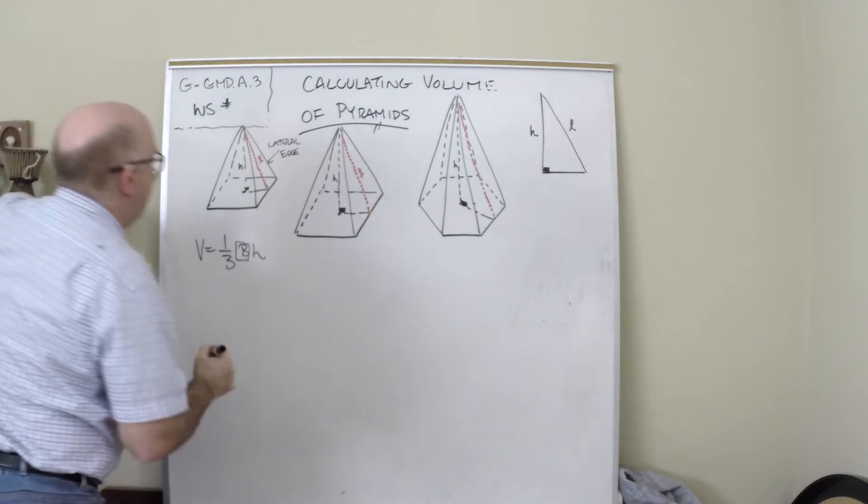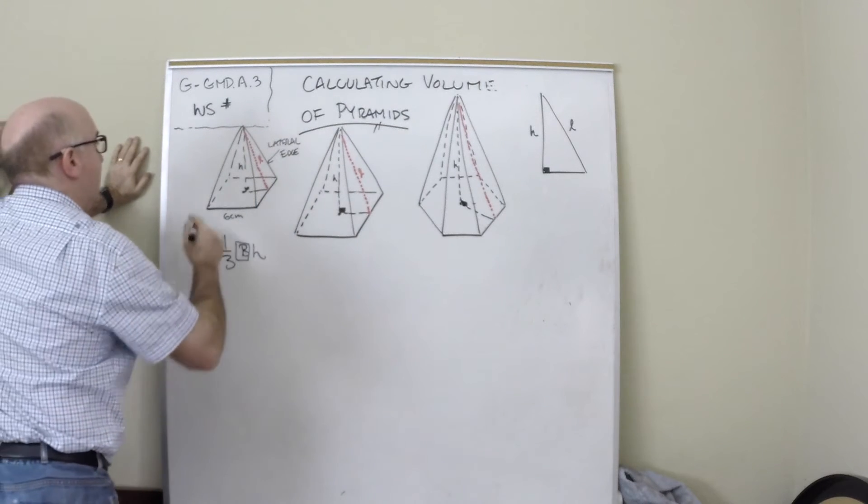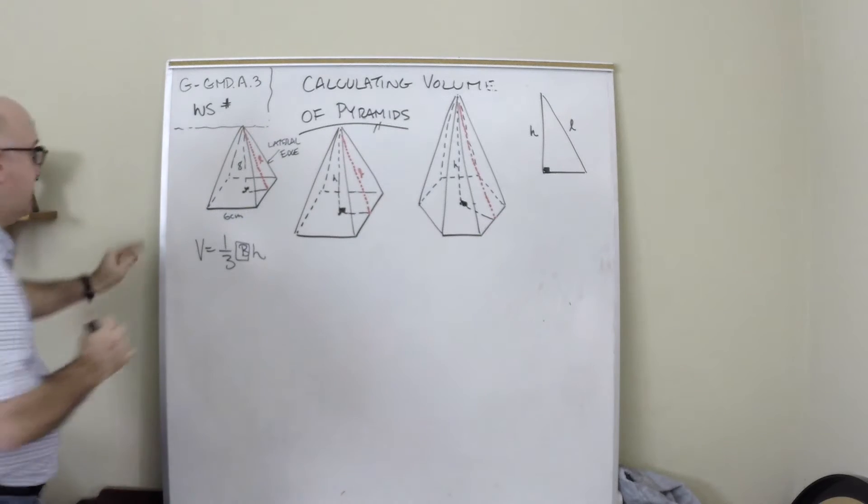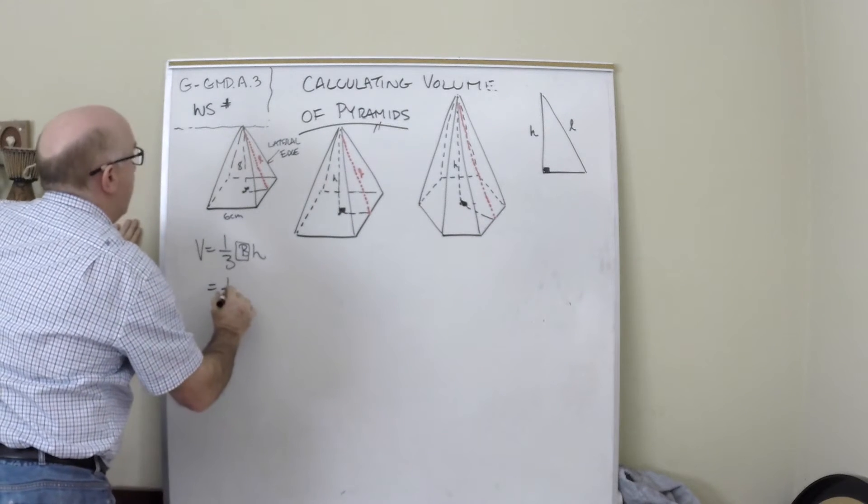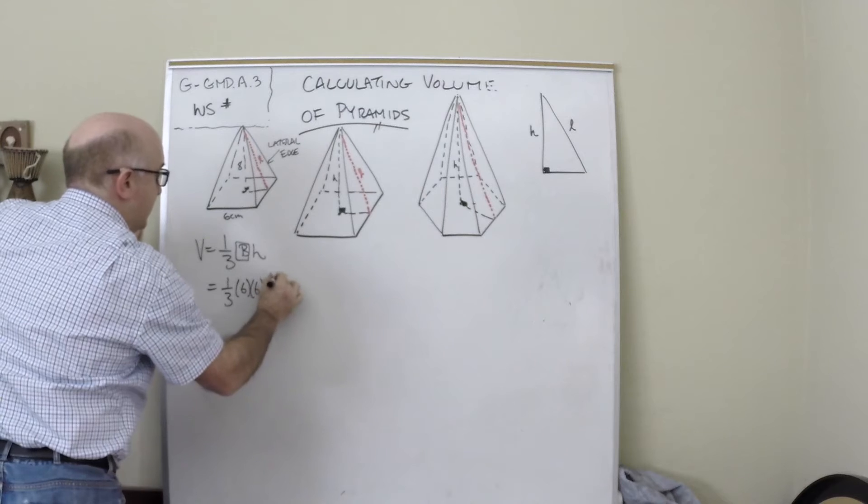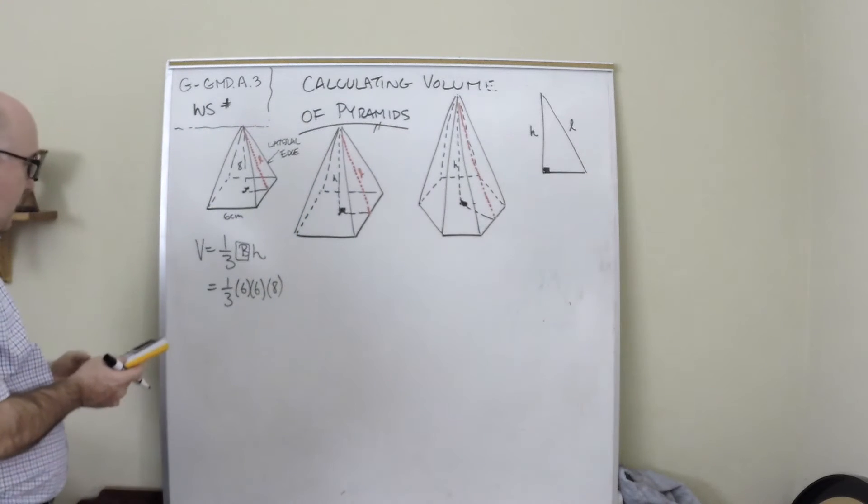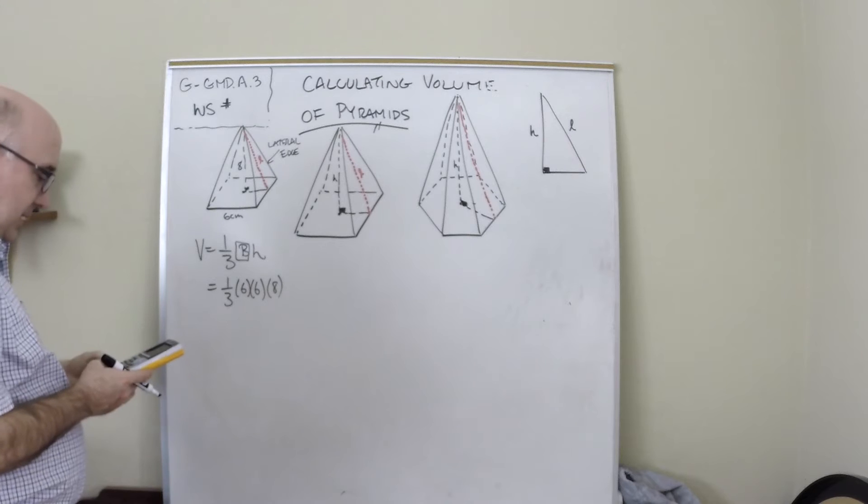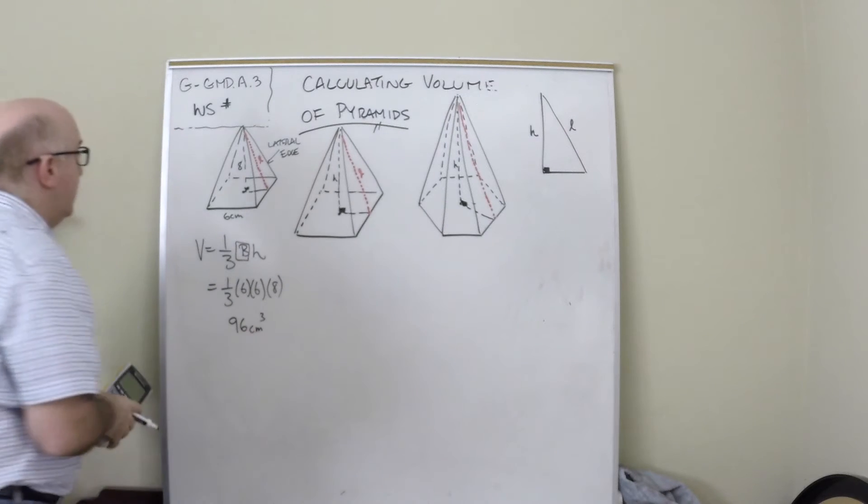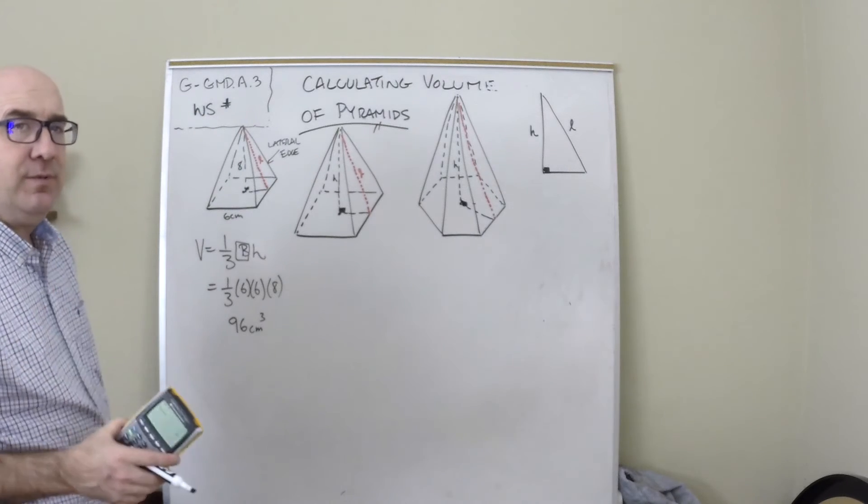Let's put some numbers up here. Let's say this is 6, we'll call this a square pyramid, and this is 8. What we would do is the volume is one-third the area of the base, which is 6 times 6, and then the height is 8. We multiply these numbers together and obtain 36 divided by 3 times 8, which is 96 centimeters cubed.